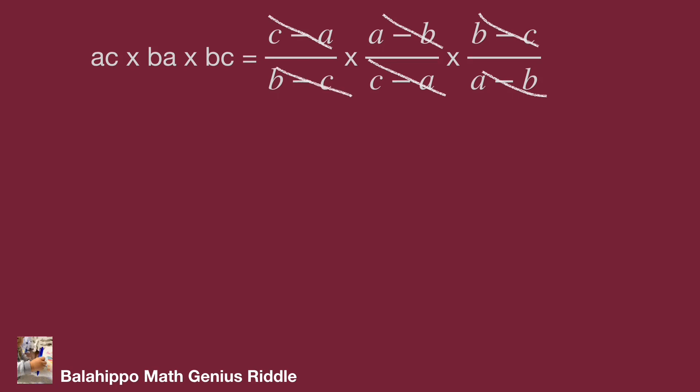The final equation becomes: bracket A times B times C bracket squared equals 1. Then we easily get A times B times C equals 1. Let's see the answer — do you get the same result? Hope you enjoy the video. Thank you.